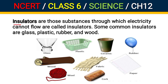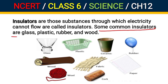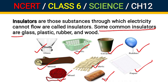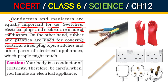Now let's look at insulators. Insulators are those substances through which electricity cannot flow. Insulators are substances or materials through which electricity does not pass. Some common insulators are glass, plastic, ceramic, rubber, wood, wool, fabric, cork, and paper. Both conductors and insulators are equally important. Switches, electric plugs and sockets are made of conductors, while rubber and plastics are used for covering electrical wires, plug tops, switches, and other parts of electric appliances that people might touch.